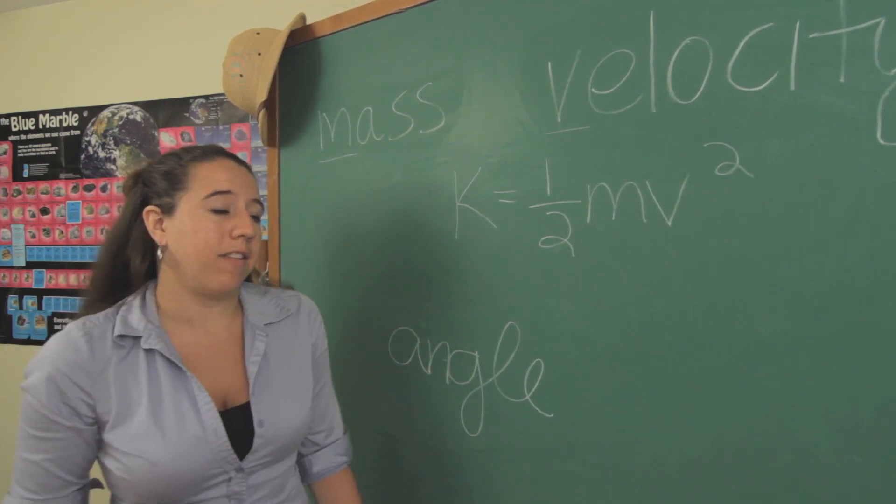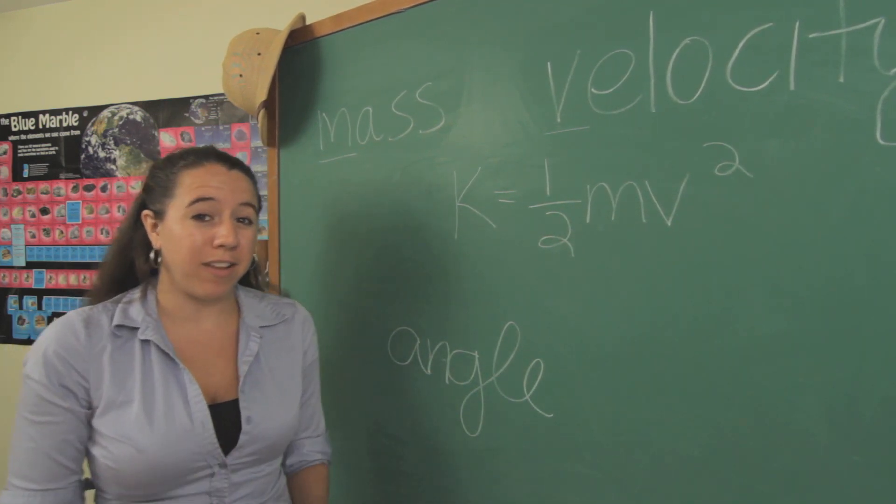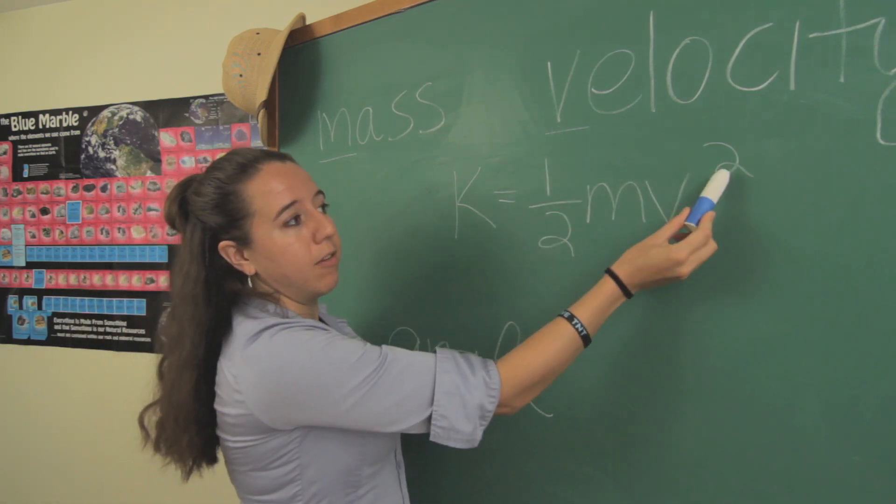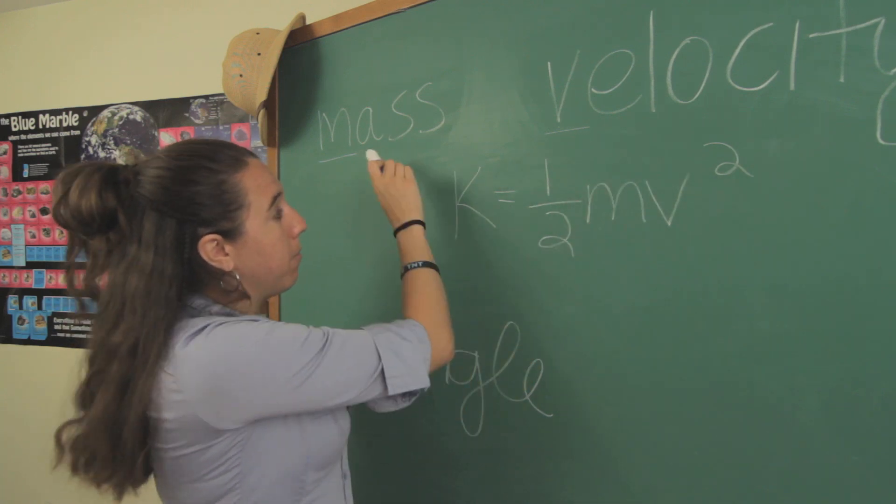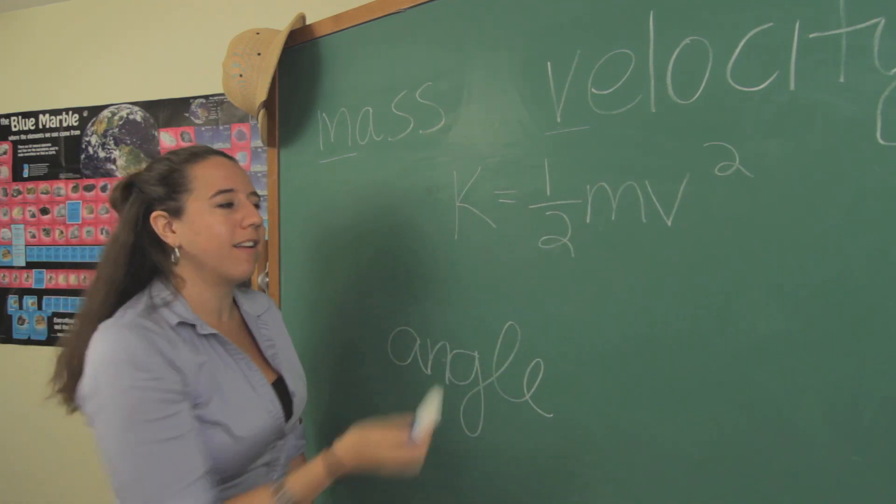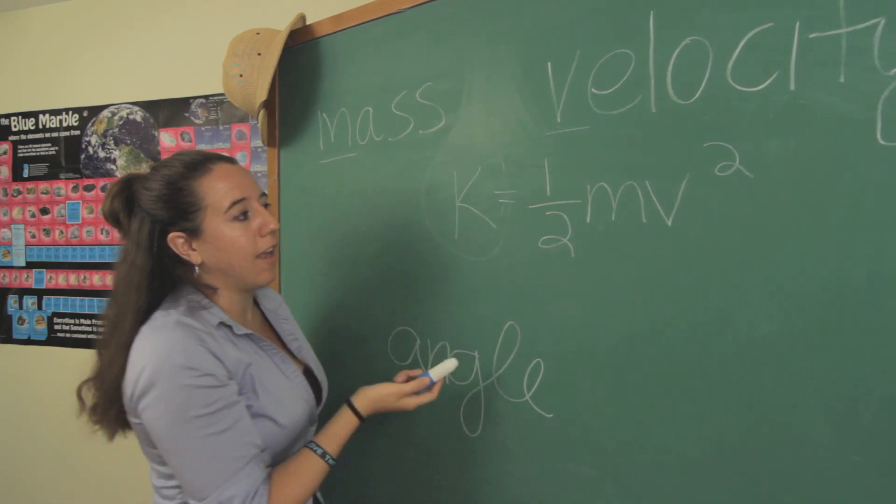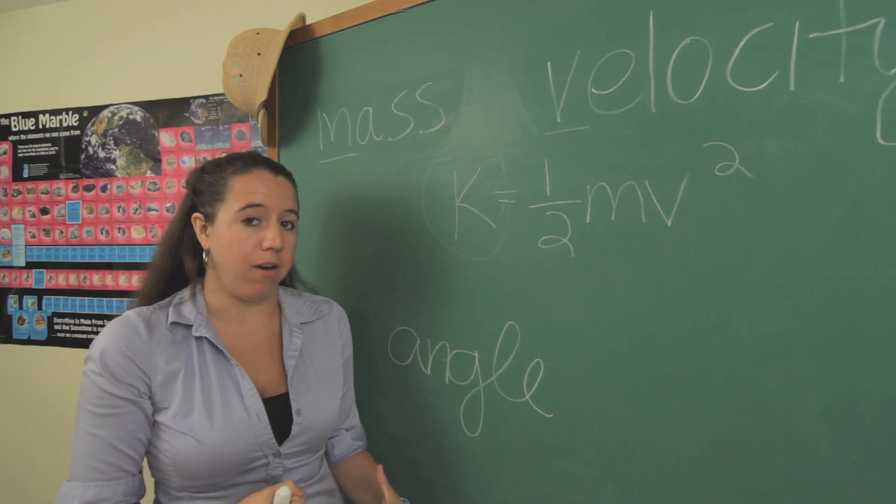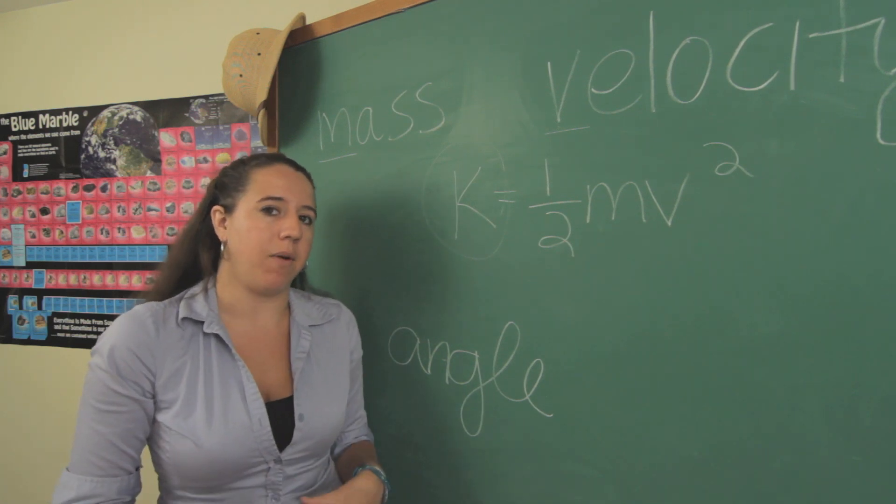So once again, this is a physics equation, but don't get scared because it's actually pretty simple. You just take your velocity and you square it, you multiply that by your mass, and then you take that number and divide it by 2, and that's it. Then you get the K, or kinetic energy. Once again, that is the measure of the raw destructive power that that meteorite is going to have.